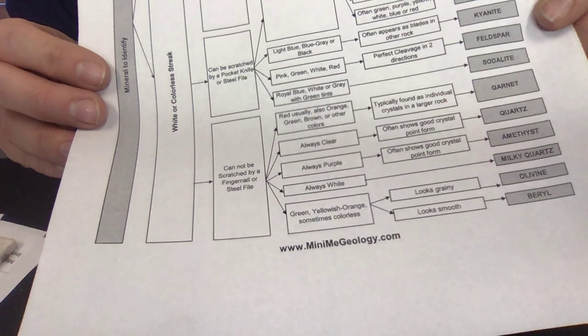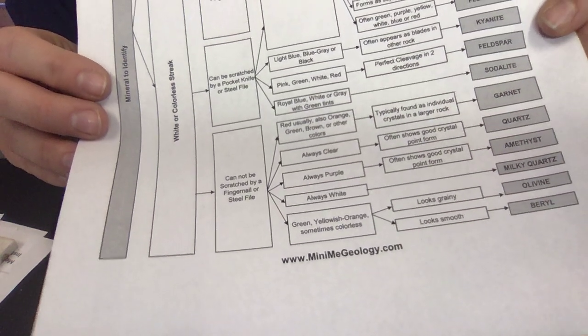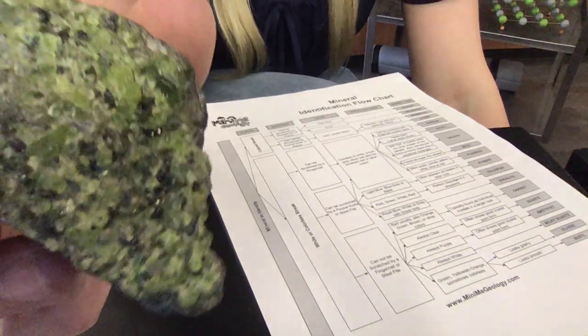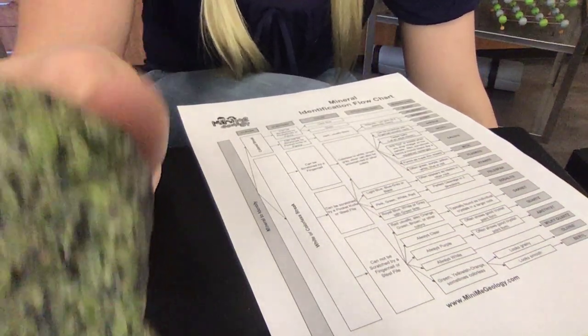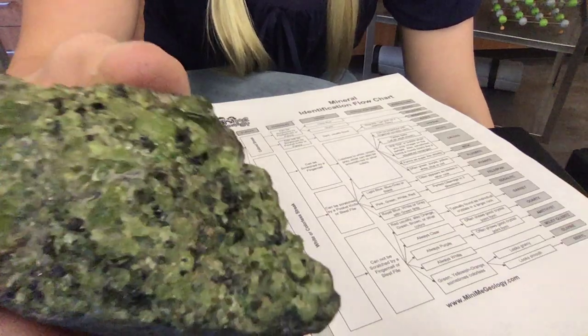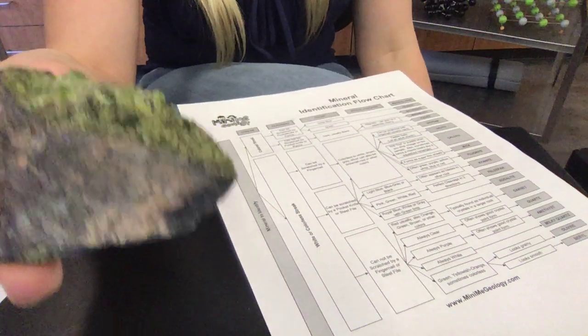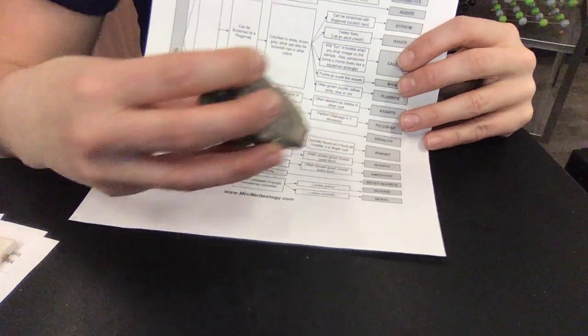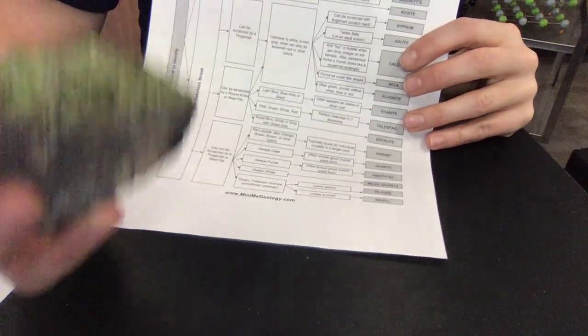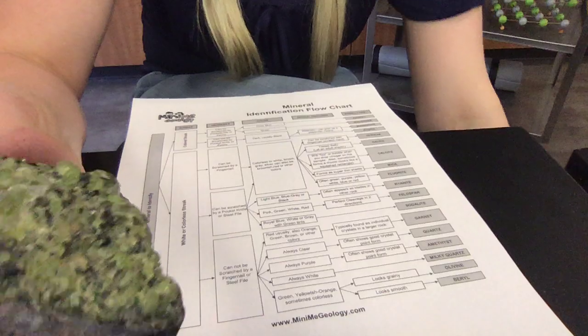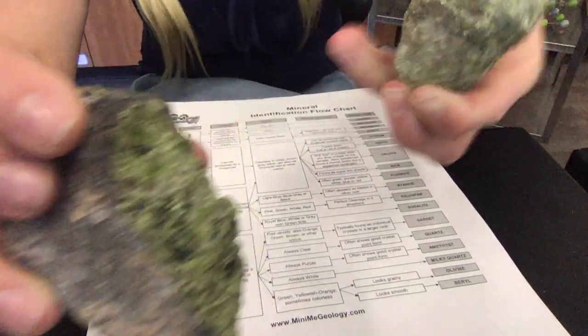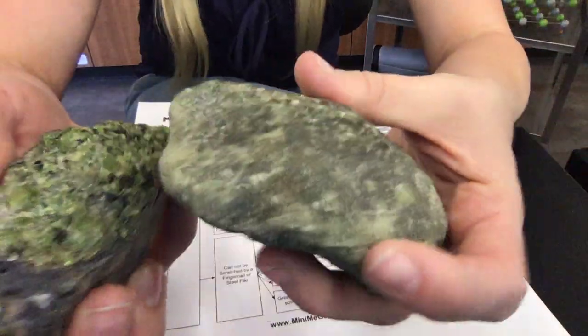So this one is a little bit confusing. This is why I'm not leaving it as a homework question because it leaves a couple of options for you because it does look a bit grainy, but you could also think of this as being crystals on a larger rock. So it brings us down to wondering if it is garnet or olivine.